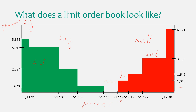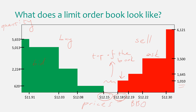That gap in the middle is called the top of the book, and it determines the bid-ask spread. What we have here is the highest bid price and the lowest ask price — the distance between the two is called the bid-ask spread. Sometimes these prices are called the inside quotes. Another term used in this context is BBO — best bid offer.